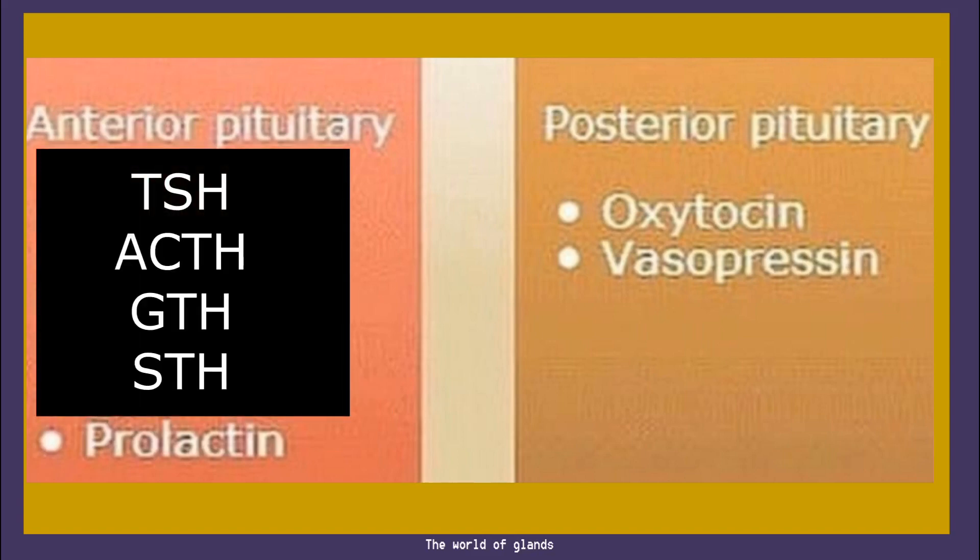So the tropic hormones are TSH, ACTH, gonadotropic hormone (GTH), and growth hormone (GH or STH). In addition to these tropic hormones, there is one more hormone secreted by anterior pituitary — that is prolactin. Coming to posterior pituitary, as mentioned, it won't produce any hormone but acts as a storehouse of certain hormones produced by hypothalamus.